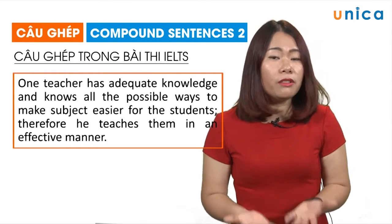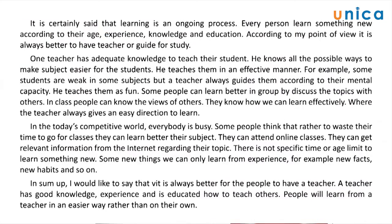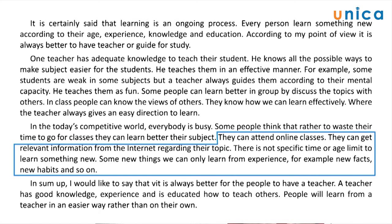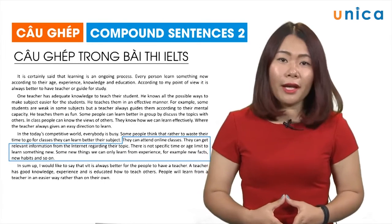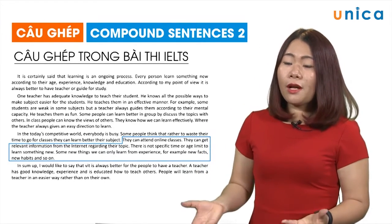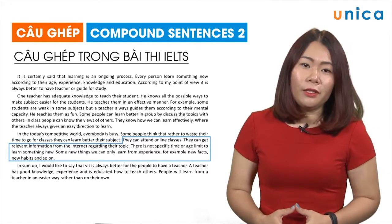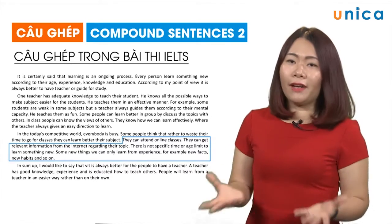Người ca sẽ giúp các bạn sửa một nhóm câu nữa. Đoạn 3 chúng ta thấy có các câu như sau: 'They can attend online classes.' 'They can get relevant information from the internet regarding their topic.' 'This is not specific time or age limit to learn something new.' 'Some new things we can only learn from experience, for example, new facts, new habits and so on.' Đây cũng là một loạt các câu đơn, và chúng ta nhìn thấy giữa các câu có sự quan hệ — ví dụ như trùng chủ ngữ, hoặc câu sau bổ sung ý nghĩa cho câu trước — nên chúng ta có thể ghép các câu này thành một.